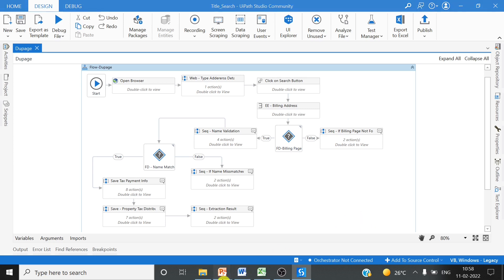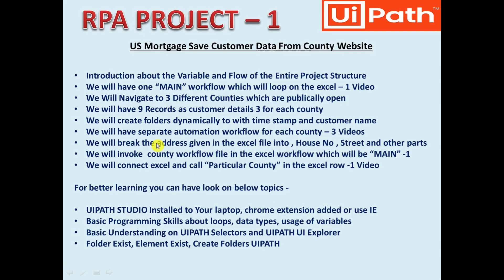Once we have developed all the county workflows, the next step is to loop on each record and break the address into house number, street, and other required parts. This is how we will connect the entire workflow. The main workflow, which is running on the Excel, will call the county workflows inside it and perform all the actions required in the process.